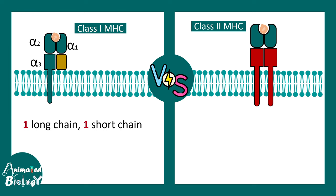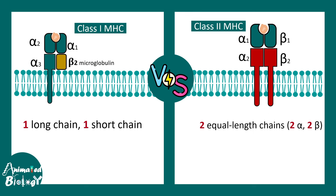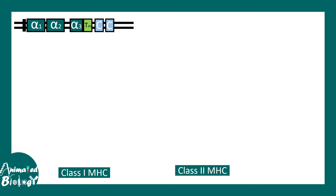It's also important to note that class 1 MHC has one long chain and one short chain, and beta-2 microglobulin is also present. In the case of class 2 MHC, there are two equal-length chains: alpha and beta.